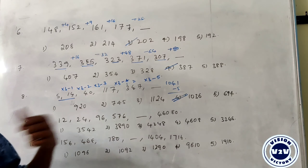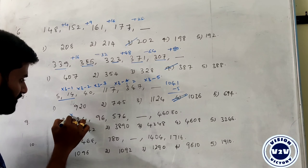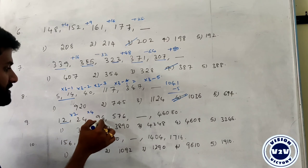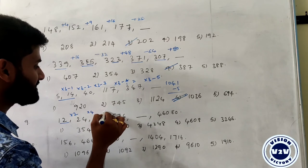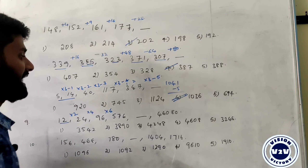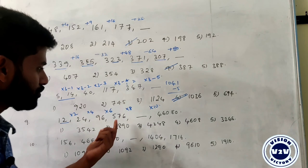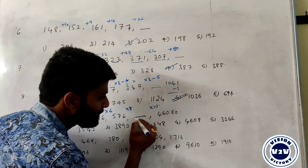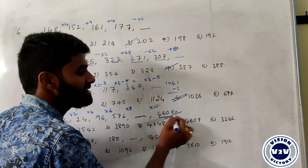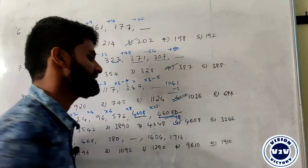Next: 12, 24, 96, 576, 4608. The series multiplies by 2, then 4, then 6, then 8. So the next multiplier is 10. 576 times 10 is 5760, but we check 4608 times 10 gives 46080. The last digit zero cancels, giving 4608.0, so the answer is 4608.